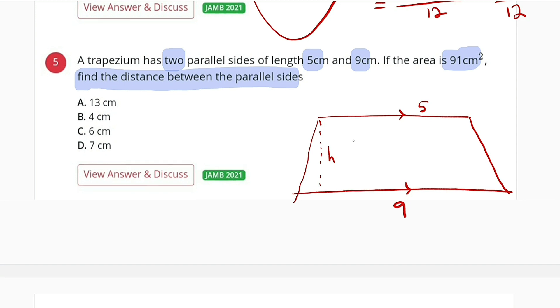Remember that the area of the trapezium is equal to half the sum of the two sides. We used to call them a and b, but this time around we have 5 and 9 that we multiply by the height.